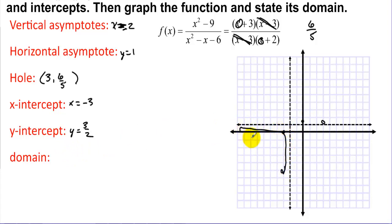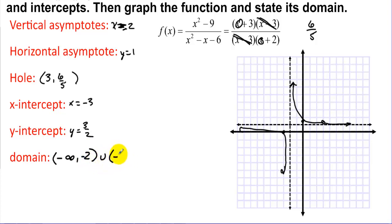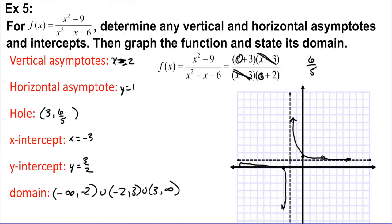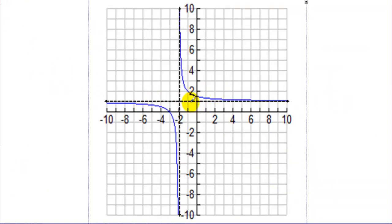With all the information, the graph follows the asymptotes, passes through the intercepts, and passes through the open dot (hole) at (3, 6/5). The domain must exclude both x = -2 (vertical asymptote) and x = 3 (hole): (-∞, -2) ∪ (-2, 3) ∪ (3, ∞). A graphing utility confirms the graph, though the hole at x = 3 may not display clearly.